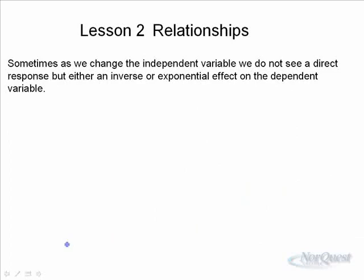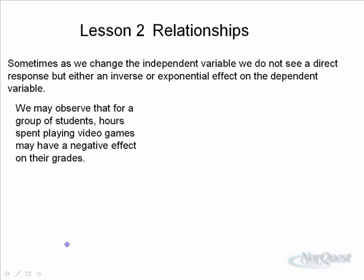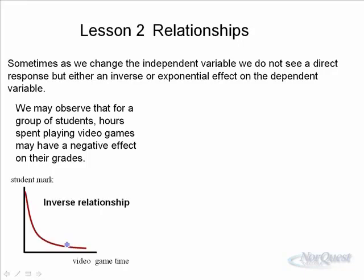Sometimes when we change the independent or manipulated variable, we don't see a direct response — one thing gets bigger and the other gets bigger. Sometimes we see what is called an inverse, or perhaps even an exponential, effect on the variable. For example, we might observe that hours spent playing video games may have a negative effect on grades. The student mark is the responding variable, the amount of video game time is the manipulated variable, and as the amount of time increases, the mark goes down. This is a typical example of an inverse relationship — one thing gets bigger, the other gets smaller.